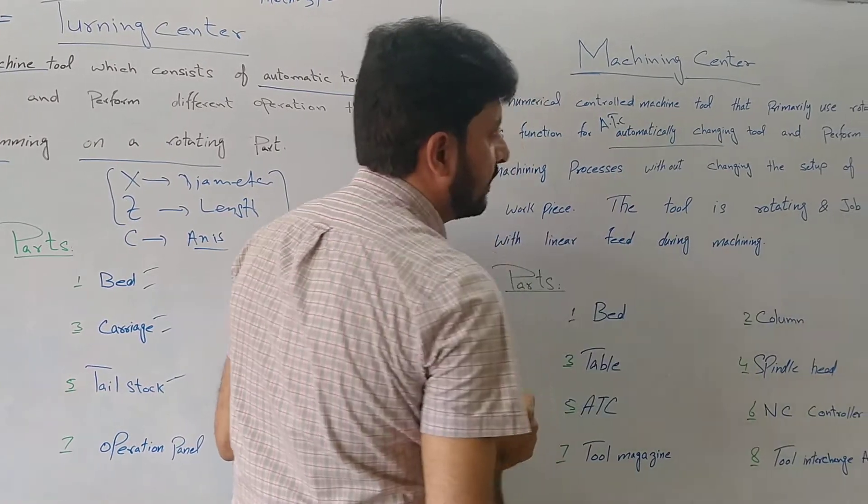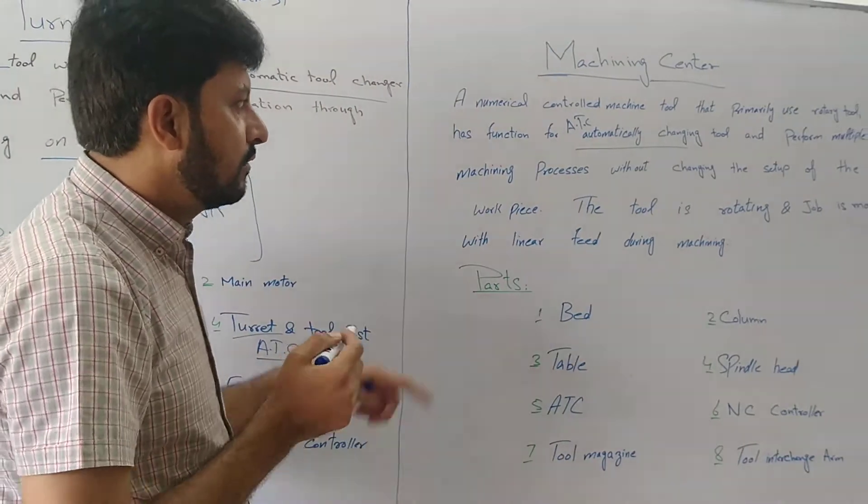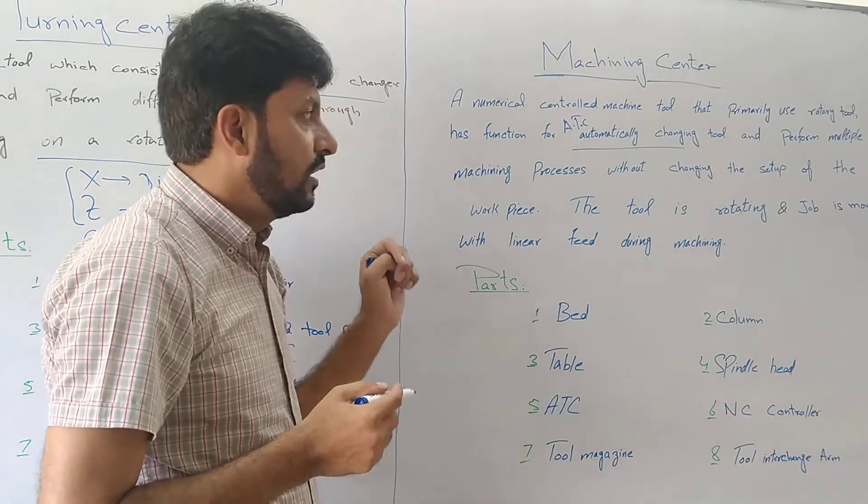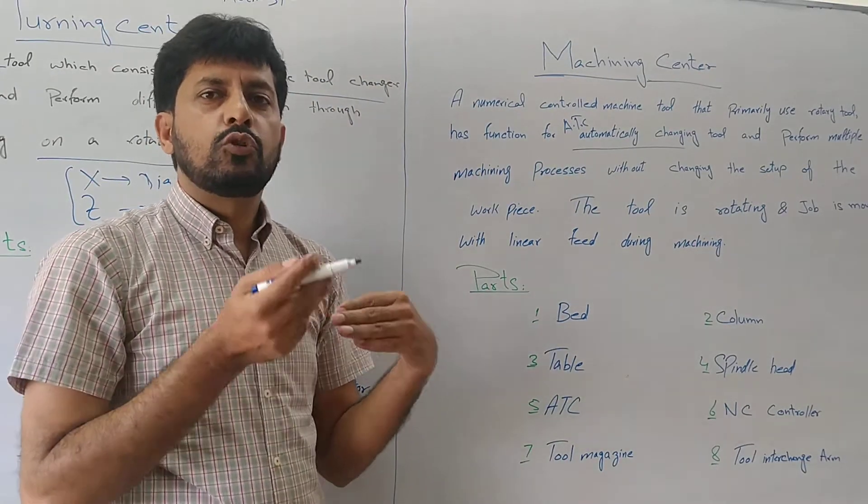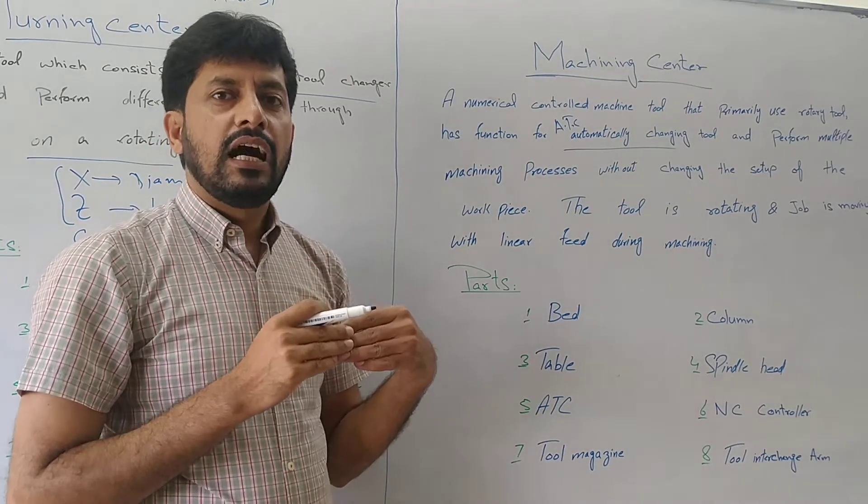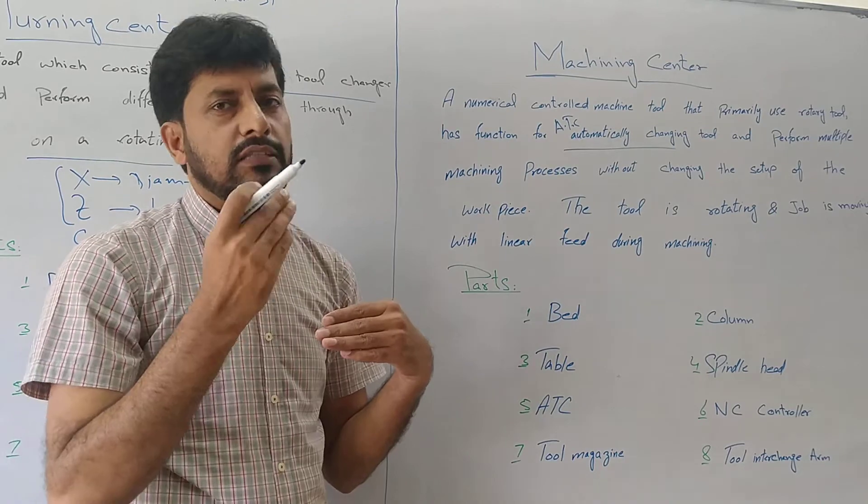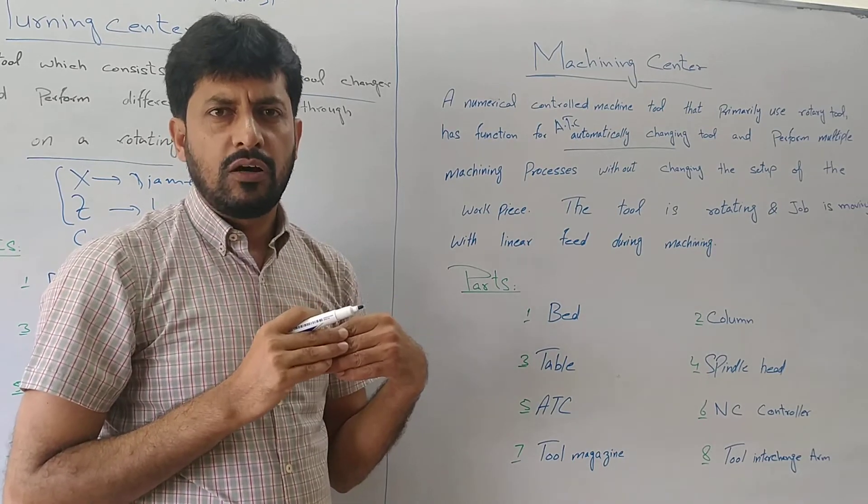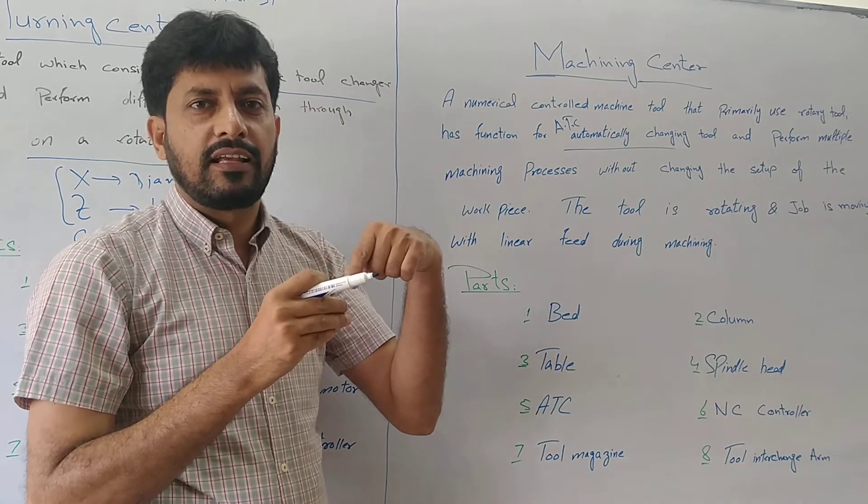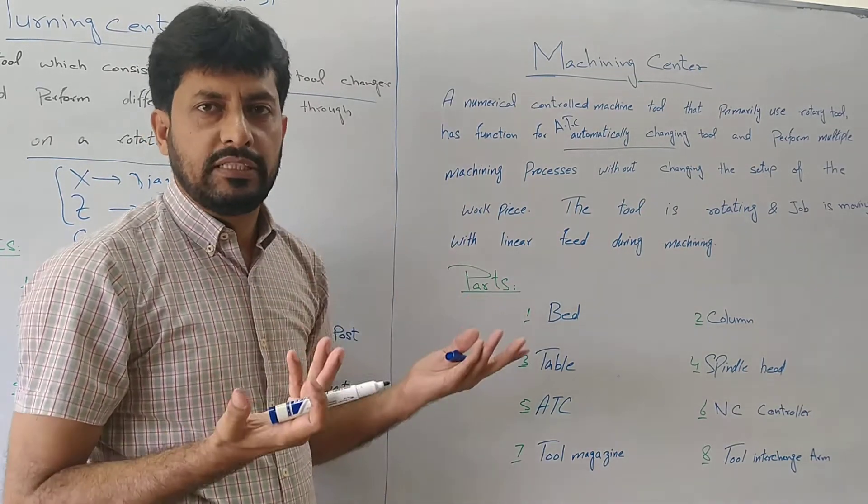Automatic tool changer. And perform multiple machining processes with a change step of workpiece. So we can change the workpiece. If we can do the operation on the same way. For example, we can do indexing. What happens if we can do the spindle. We can rotate the tool. We can cut the cutting. The one required shape will be we can get.